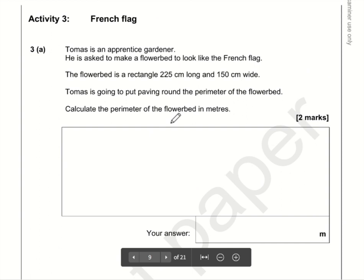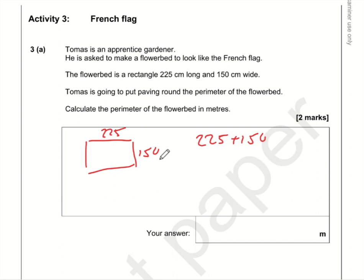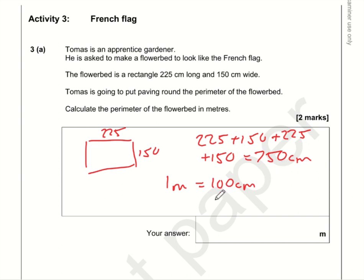We want to calculate the perimeter in metres, so let's work in centimetres first. The dimensions are 225 and 150, so the perimeter is 225 plus 150 plus 225 plus 150, which is 750 centimetres. One metre is 100 centimetres, so we divide by 100: 750 divided by 100 is 7.5 metres.